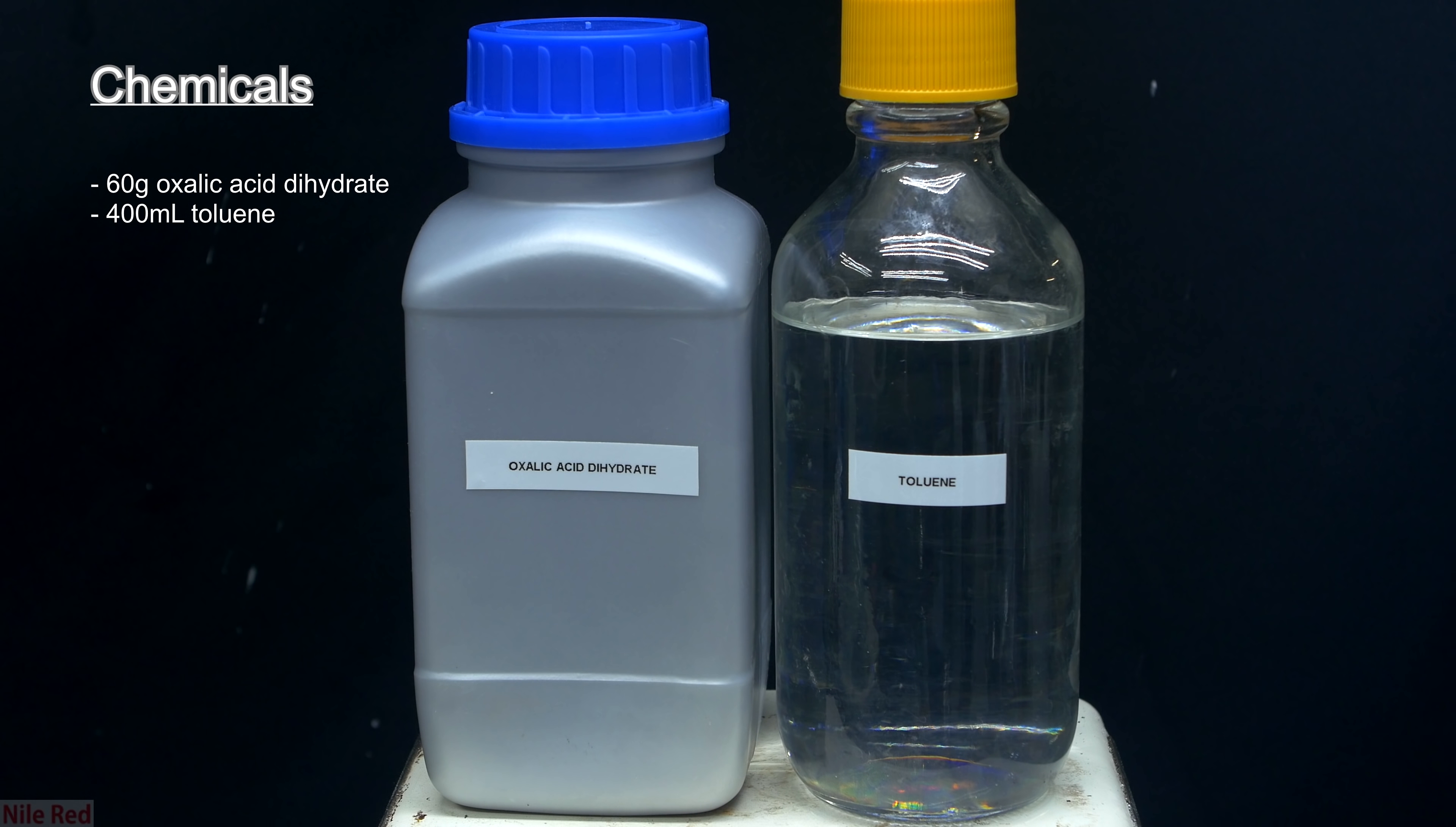So basically what's going to happen is as we heat things up, the oxalic acid is going to release water into the toluene, and the water and toluene are going to boil away as a mixture. We could in theory use a distillation apparatus with a large excess of toluene and just do a continual distillation, but I think it's much smarter to use something called a Dean-Stark apparatus.